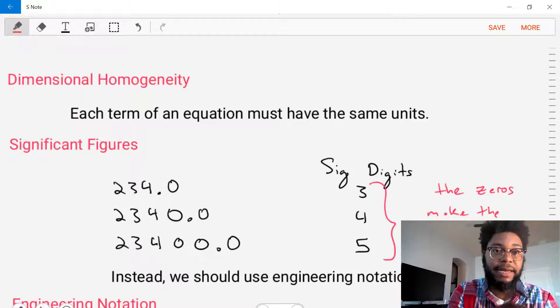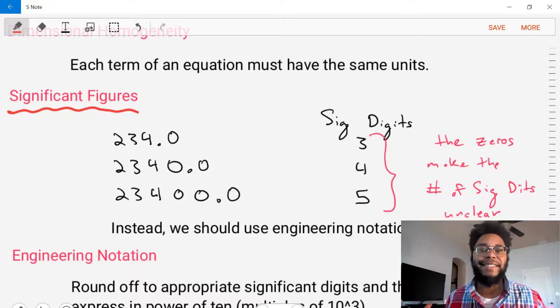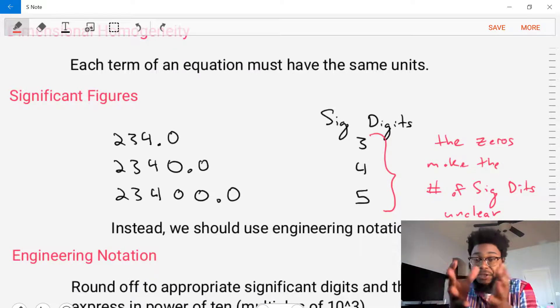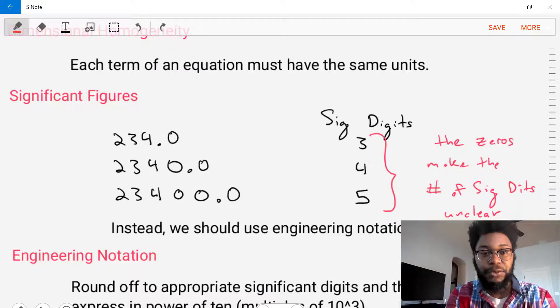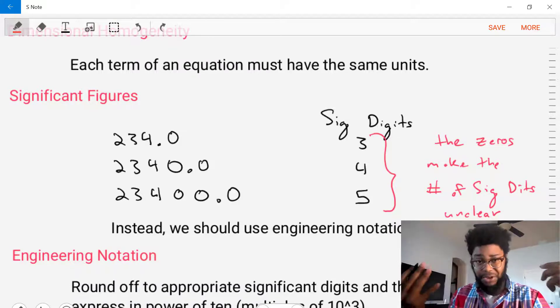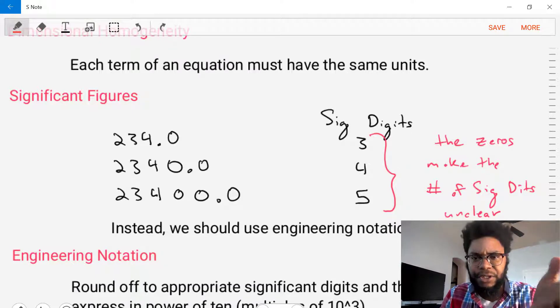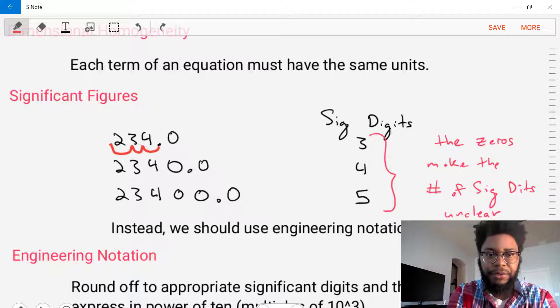Now let's move on to our second topic, which is significant figures or also called significant digits. Whenever we make a calculation, that calculation can be at different orders of magnitude. The example we have here are three different numbers: 234, 2340, and 23,400. These are all numbers that have different orders of magnitude.